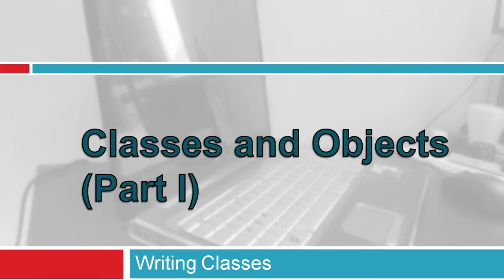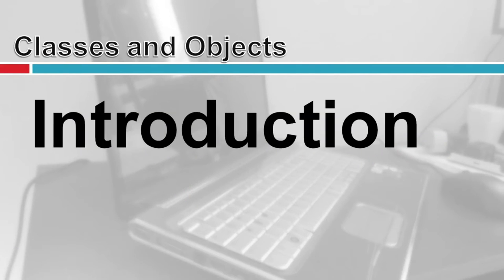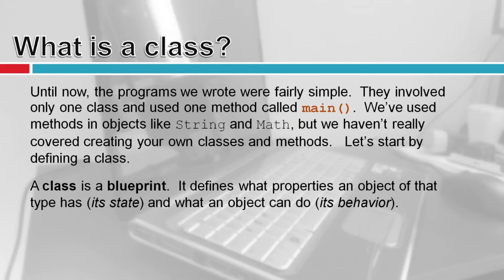Welcome back to Bytes of Pi. Today we're going to cover classes and objects, part one. Programs we've written are fairly simple — they've involved only one class and used one method called main. We've used methods in objects like String and Math, but we really haven't covered creating your own classes and methods.